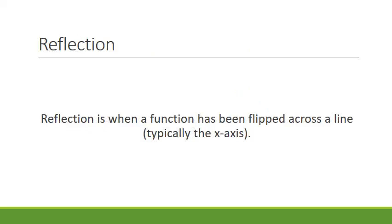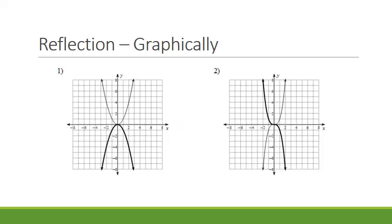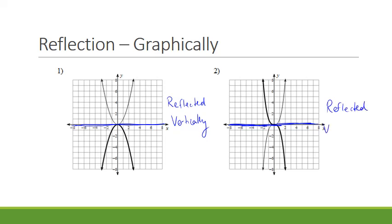Reflection is when a function has been flipped across a line. For functions, we usually have it flipped across the x-axis. Looking at these two graphs, for number 1, our parent function was the skinny parabola, and it looks as though we took it and flipped the graph over the x-axis — so it's been reflected vertically. Same for number 2: we took our skinny line and flipped it over the x-axis, so it too has been reflected vertically.